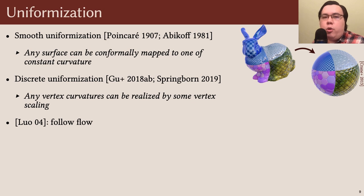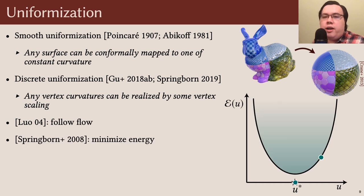In 2004, Luo gave a flow which takes in target curvatures on a mesh and evolves the scale factors until they achieve these desired curvatures. Luo observed that this flow is the gradient flow of a locally convex energy which was then given in an explicit form by Springborn and colleagues in 2008. So essentially, you can find discrete conformal maps to the plane by simply minimizing some energy and then laying out the result.